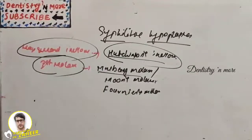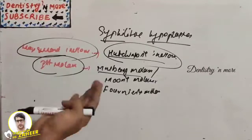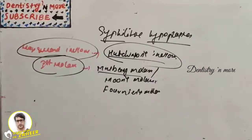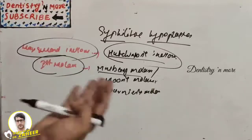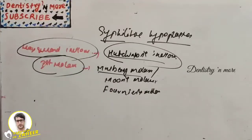Other causes of enamel hypoplasia such as hypocalcemia, birth injury, fever, and fluorosis are covered in detail in other videos. Turner's hypoplasia and syphilitic hypoplasia are the two most commonly asked short notes in this topic. Hope you understood these two — I'll come back with a new topic. Thank you.